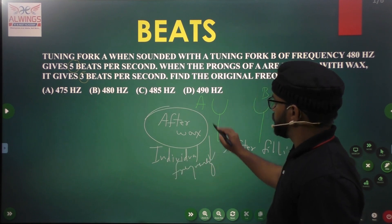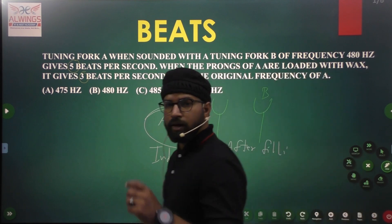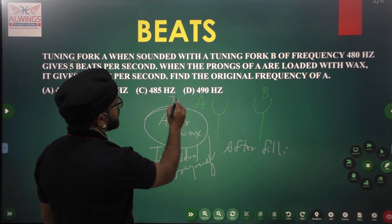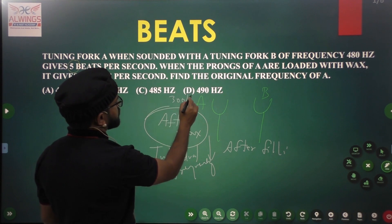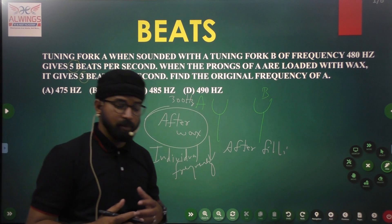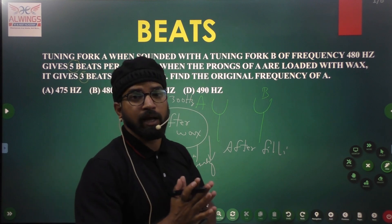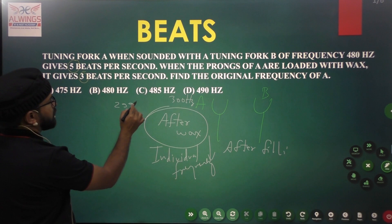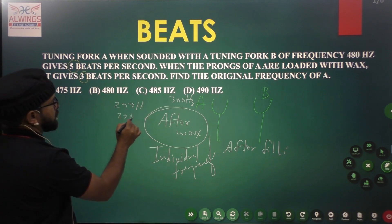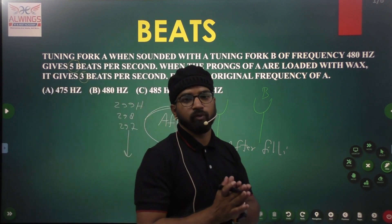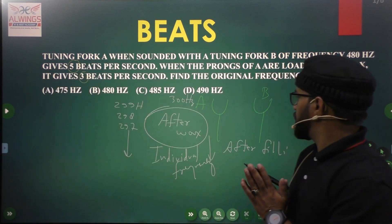If we are doing waxing over tuning fork A, suppose the frequency of A was earlier 300 Hz. After waxing, depending on how much wax we have applied, it will decrease — it may become 299 Hz, 298 Hz, 297 Hz, like this. Individual frequency of the tuning fork keeps on decreasing.